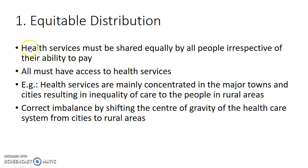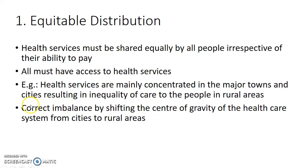Equitable distribution means health services must be shared equally by all people irrespective of their ability to pay — that is, all people must have access to health services. Right now, health services are mainly concentrated in major towns and cities, resulting in inequality of care to people in rural areas. So primary health care aims to correct this imbalance by shifting the center of gravity of the health care system from cities to rural areas.